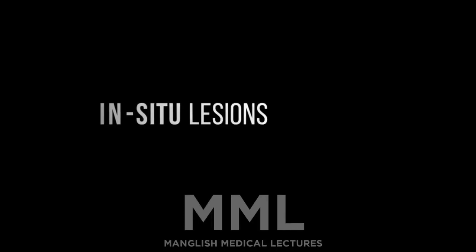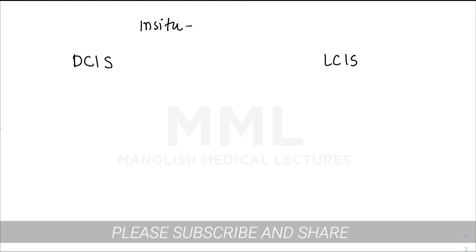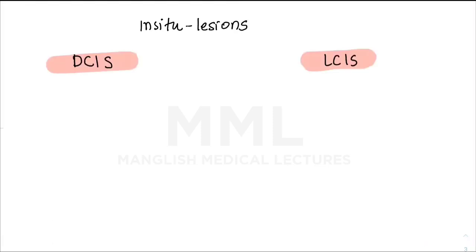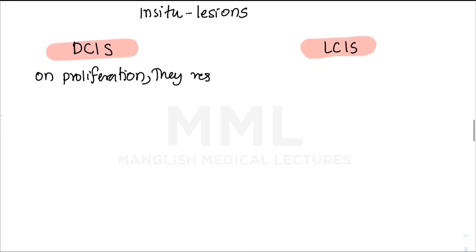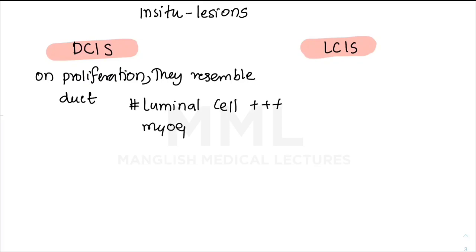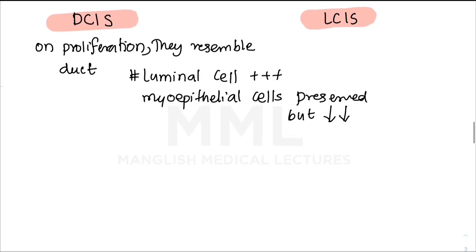Now let's discuss in-situ lesions in detail. As mentioned, in-situ lesions are divided into DCIS and LCIS. In DCIS, on proliferation the cells resemble ducts. Luminal cells are undergoing proliferation and myoepithelial cells are preserved but reduced in number.